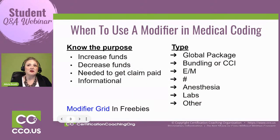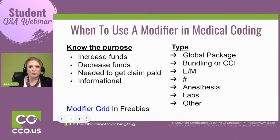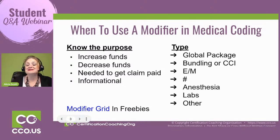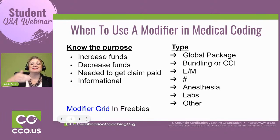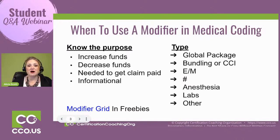When we look at the use of modifiers, first we need to know the purpose — what's the purpose of every single modifier in the CPT manual? There are also modifiers in your HCPCS manual, but once you understand the way modifiers in your CPT manual work, HCPCS is just an extension off of CPT. So know the purpose, and then we need to know the type of modifier. The purposes include increasing funds because you did more work, or decreasing funds because we weren't able to complete the intended scope. Sometimes we need a modifier to get a claim paid — we have to append it to tell the rest of the story.